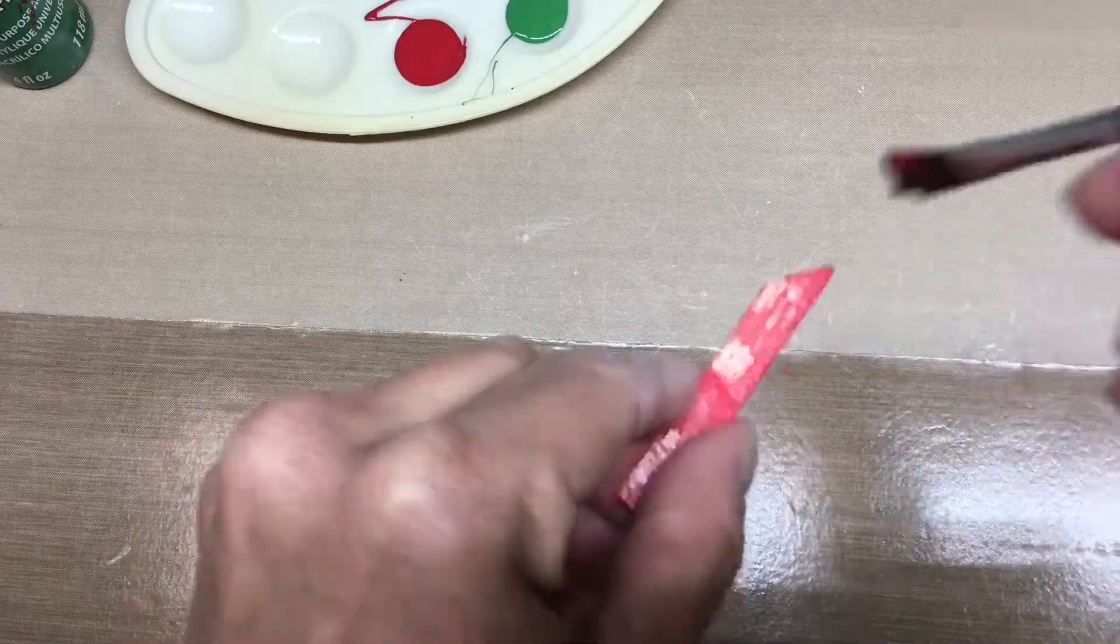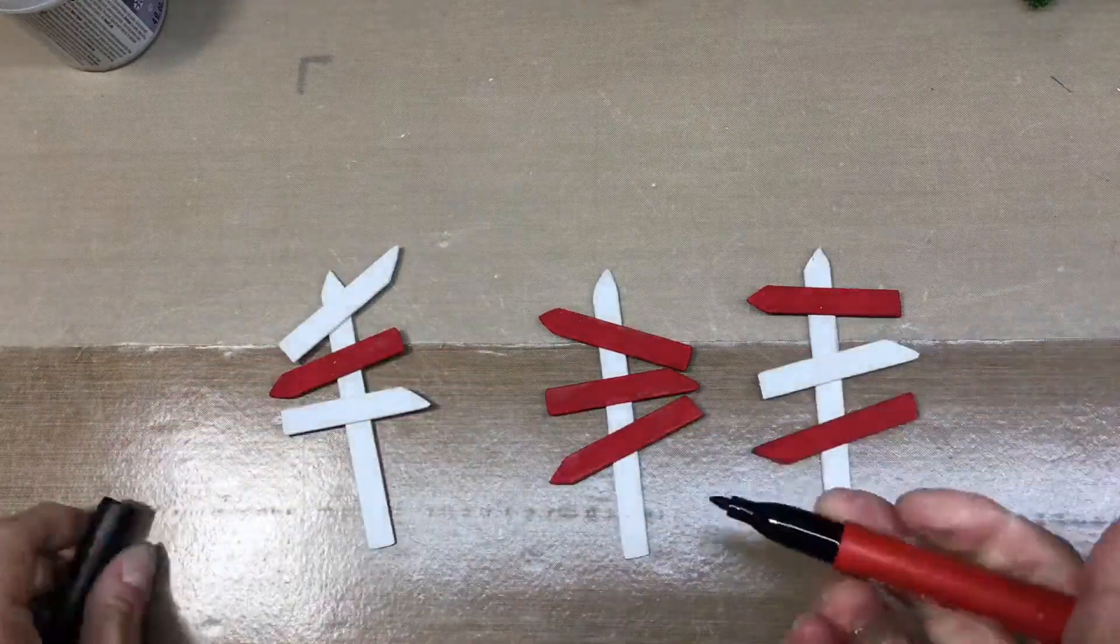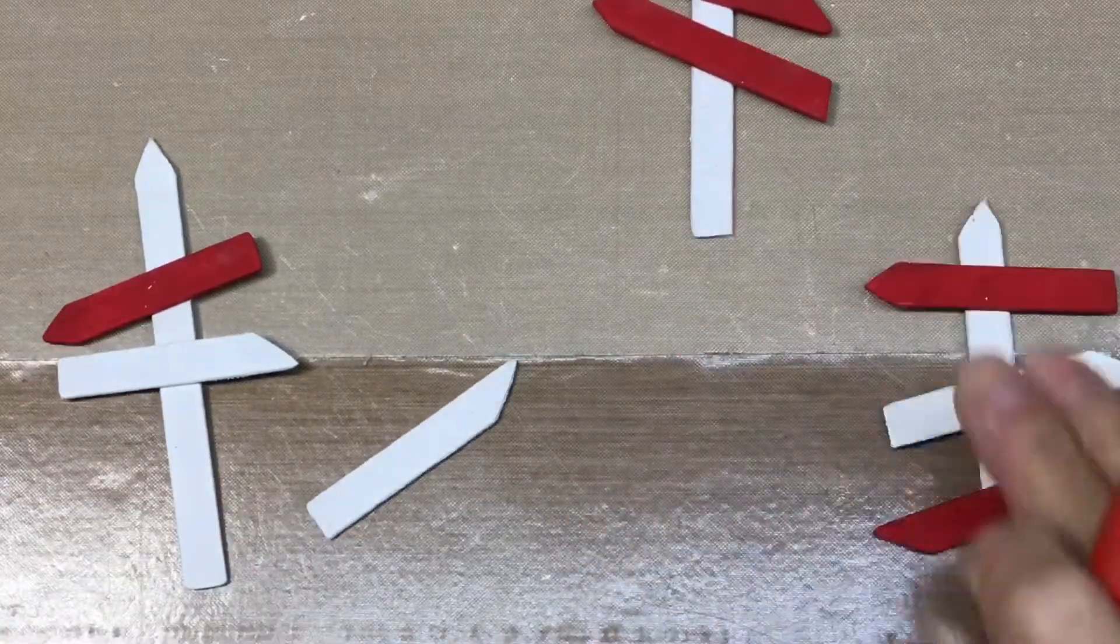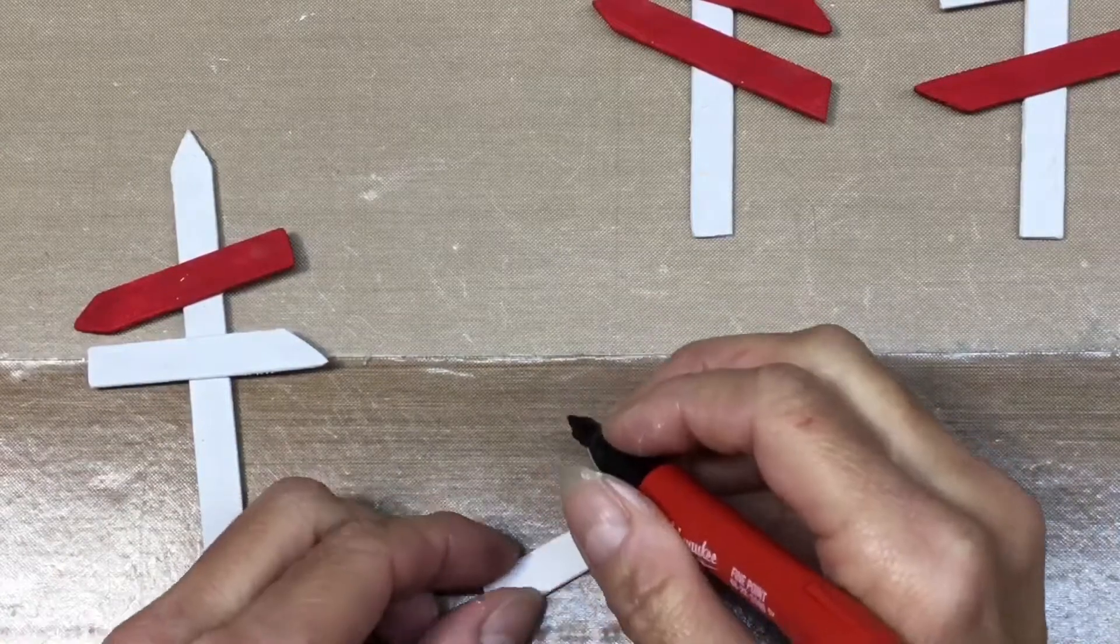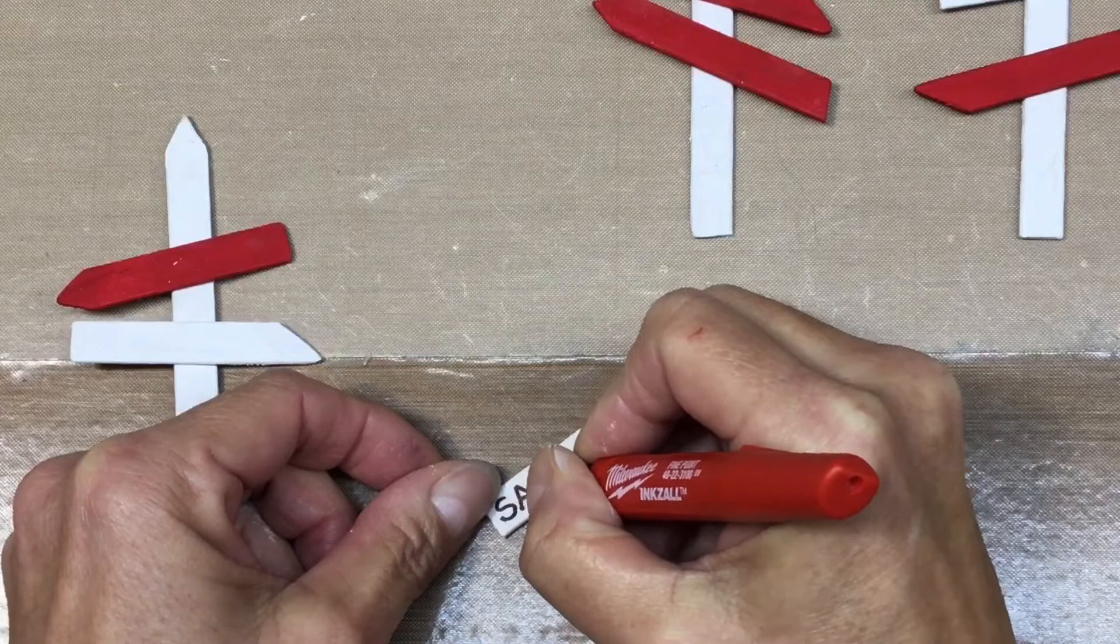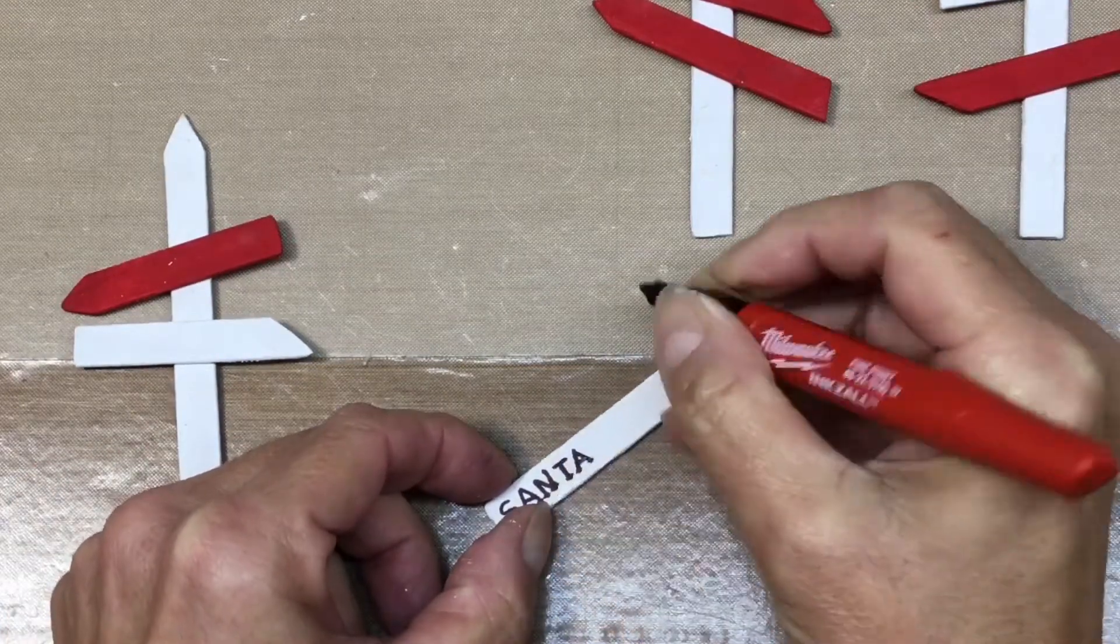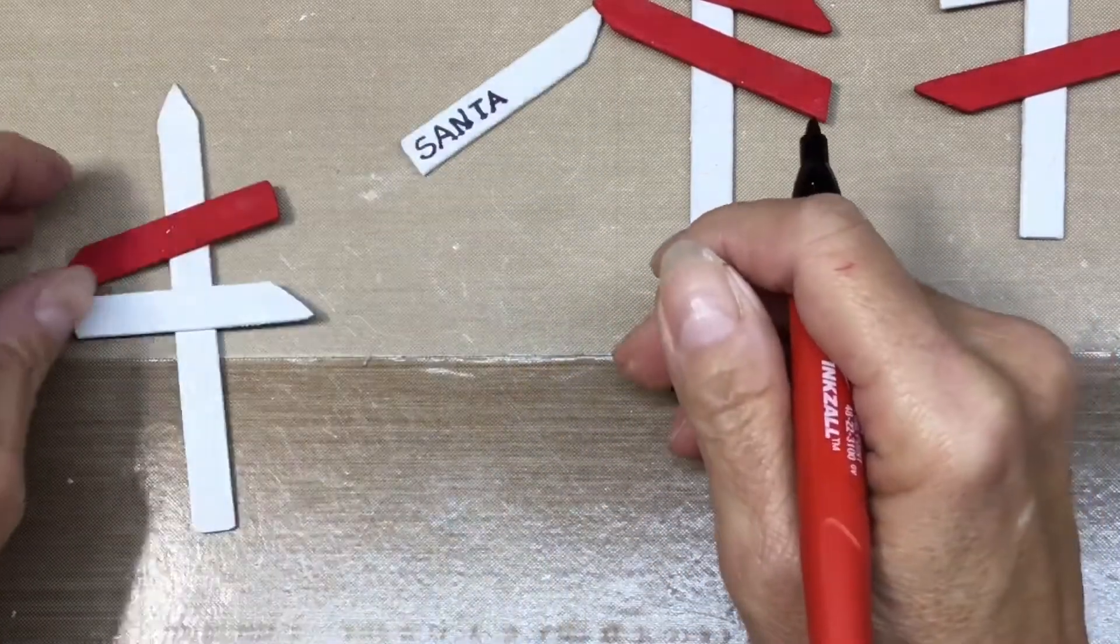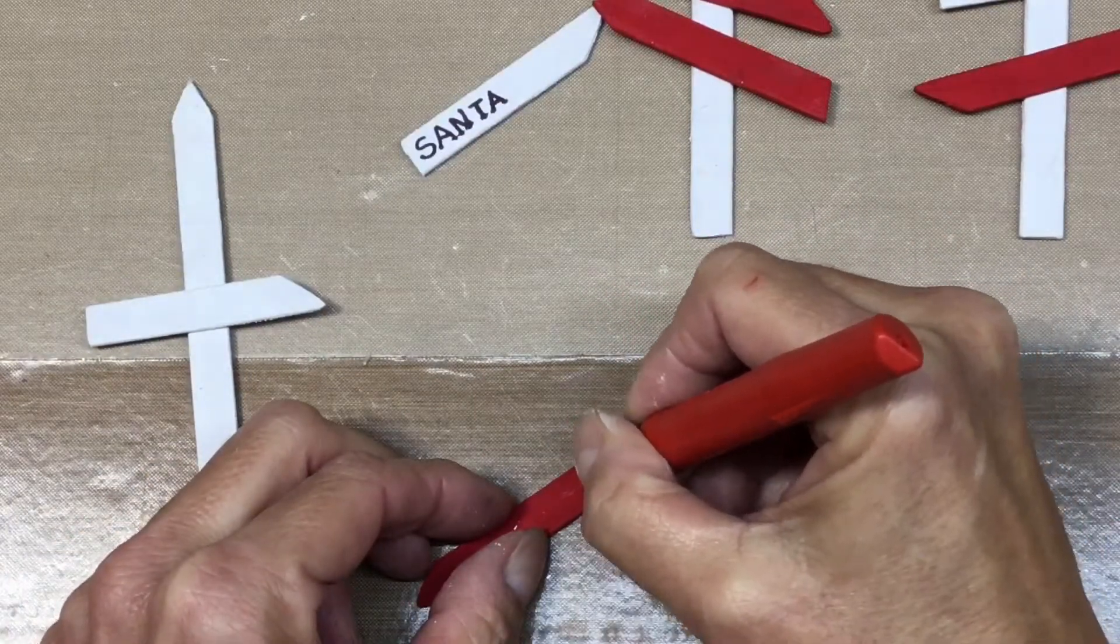Once you're done painting them and they're all dried, you just want to put them in such a way how you want to set them up and now I'm going to write where it's pointing to the direction of where you want to go. I'm just making up some things here and just go ahead and write it down and use your neatest printing if you can.